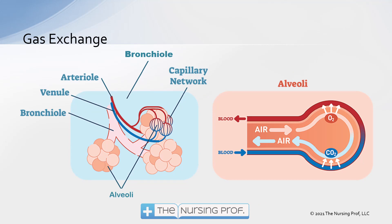Now that we have ventilation, hopefully now we will have gas exchange. Now that we have air getting down to those alveoli, the picture on the left is showing the branching out, with our respiratory bronchioles coming out to that capillary network. We have all of those little capillaries being innervated by the venules and the arterioles so that we have gas exchange that can occur. On the right hand side, you're seeing that alveolus with the blood flow moving past it, giving off its CO2 and collecting some oxygen as it goes by. This is dependent upon getting enough air down to that alveolus and also having adequate blood flow around that alveolus.